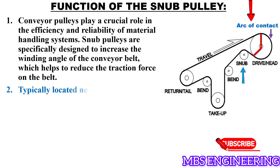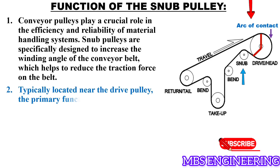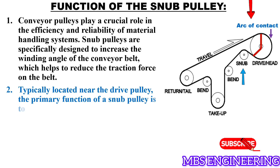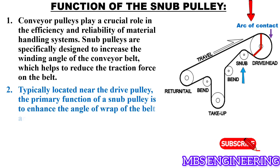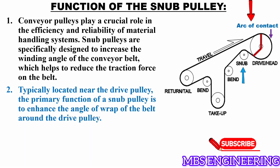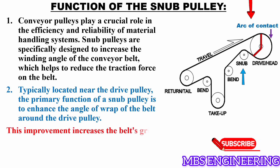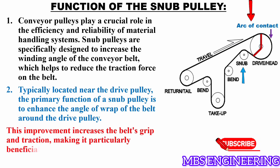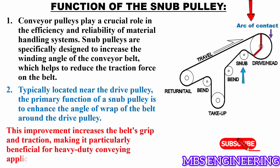The second function: typically located near the drive pulley, the primary function of a snub pulley is to enhance the angle of wrap of the belt around the drive pulley. This improvement increases the belt's grip and traction, making it particularly beneficial for heavy-duty conveying applications.